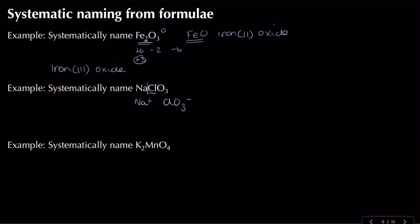Sodium always has a charge of plus one, so I don't need to systematically name that part. Chlorine can have variable oxidation states, so I need to find it: oxygen is minus two, three lots gives minus six, and the overall ion charge is minus one. To get from minus six to minus one, I add plus five.